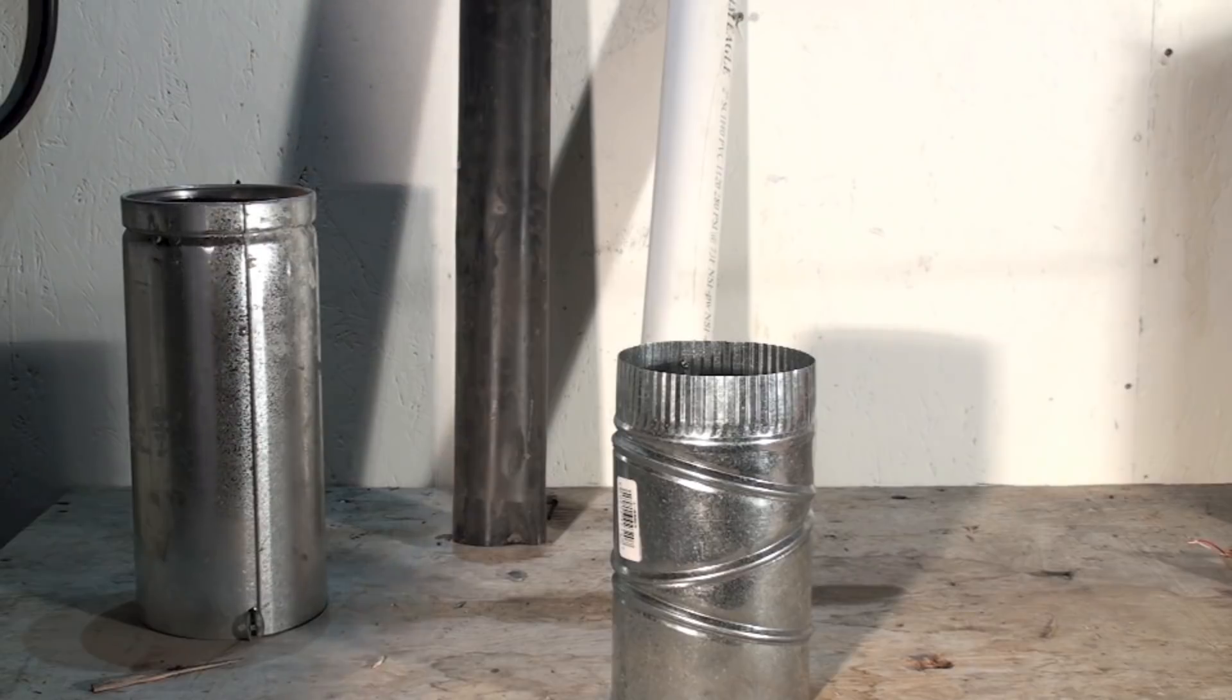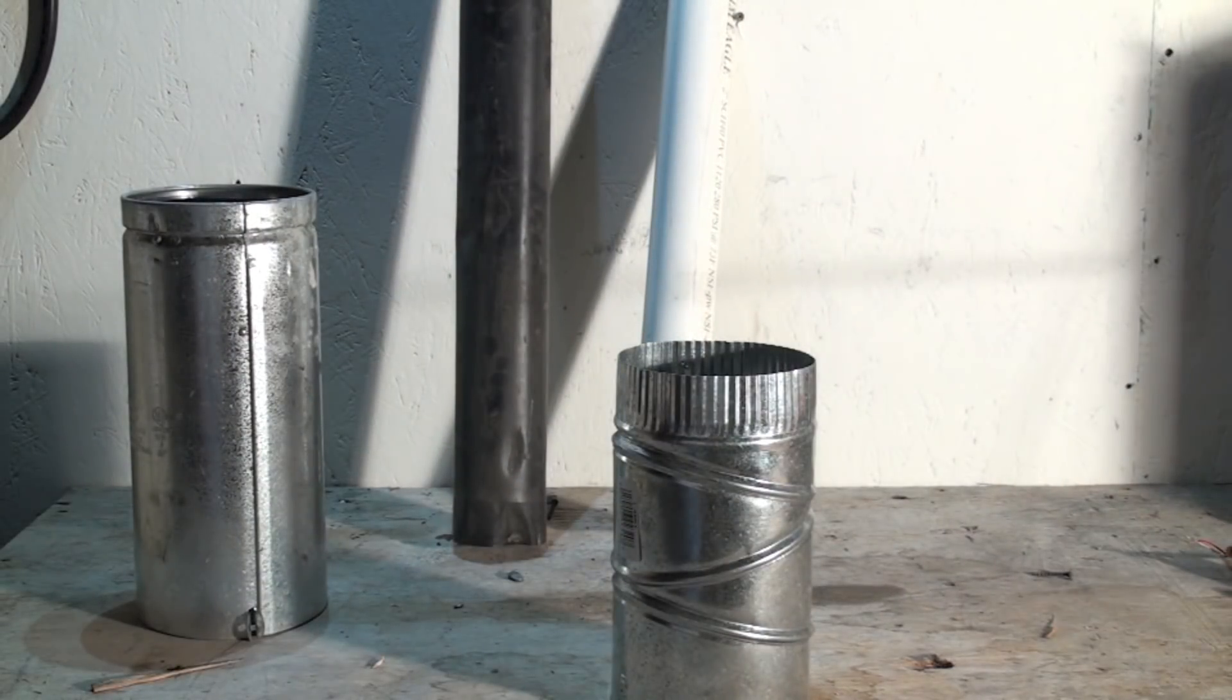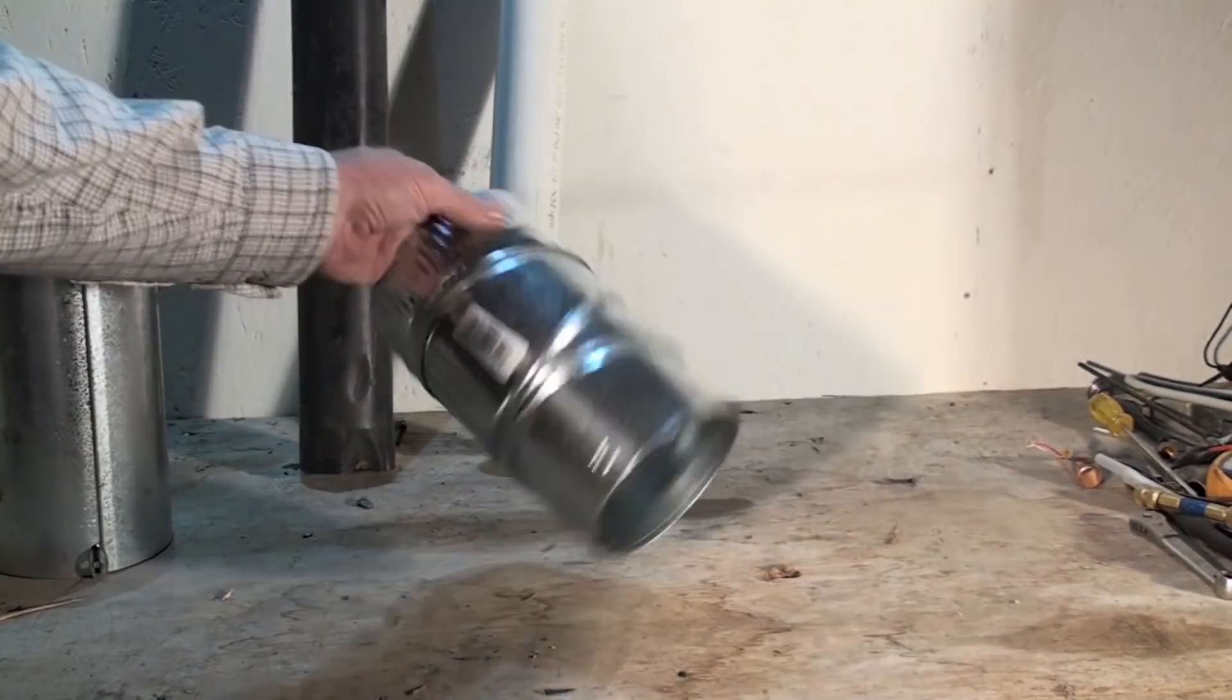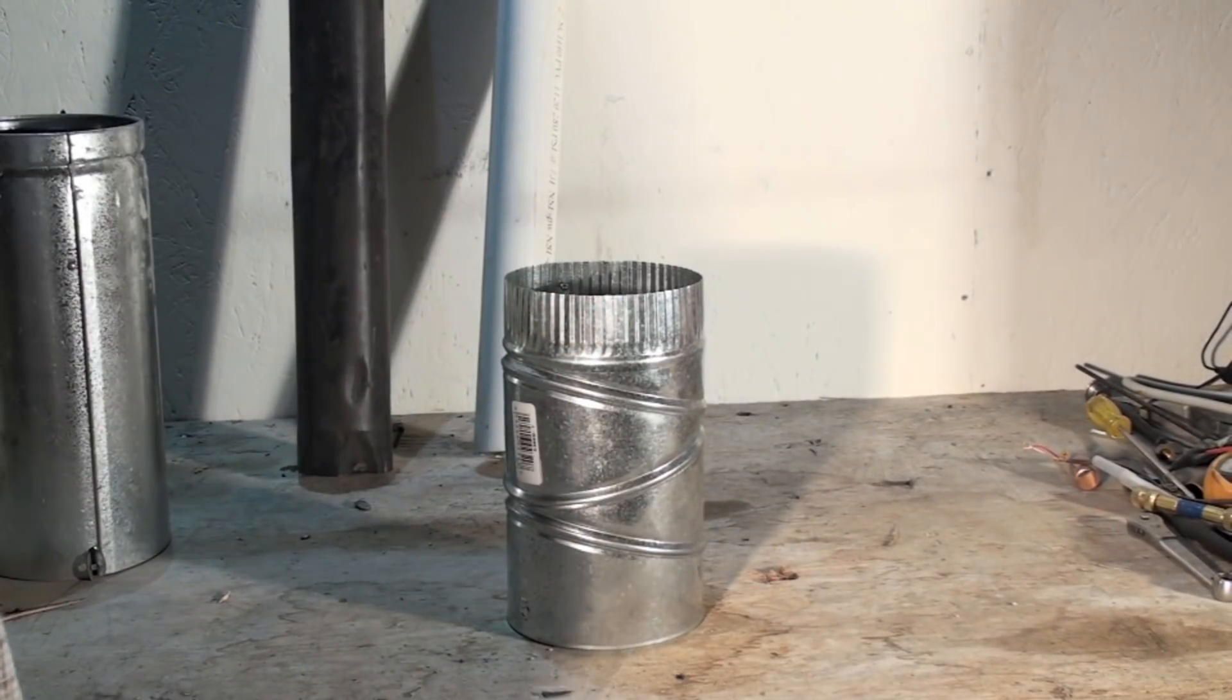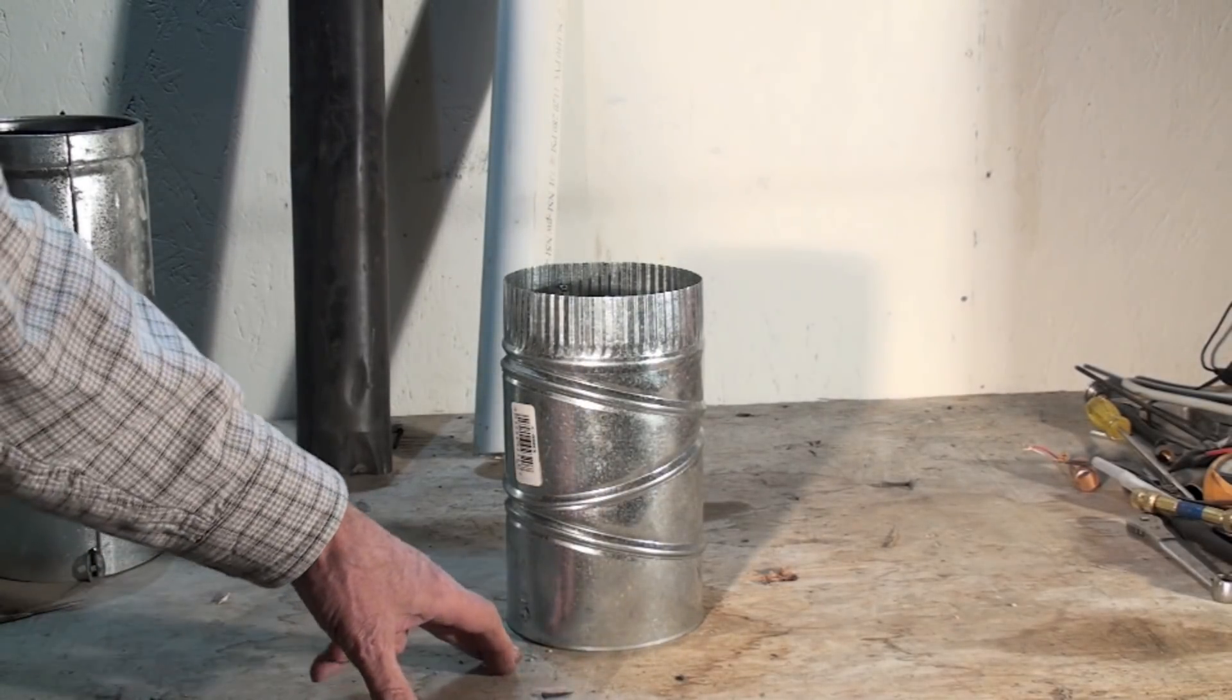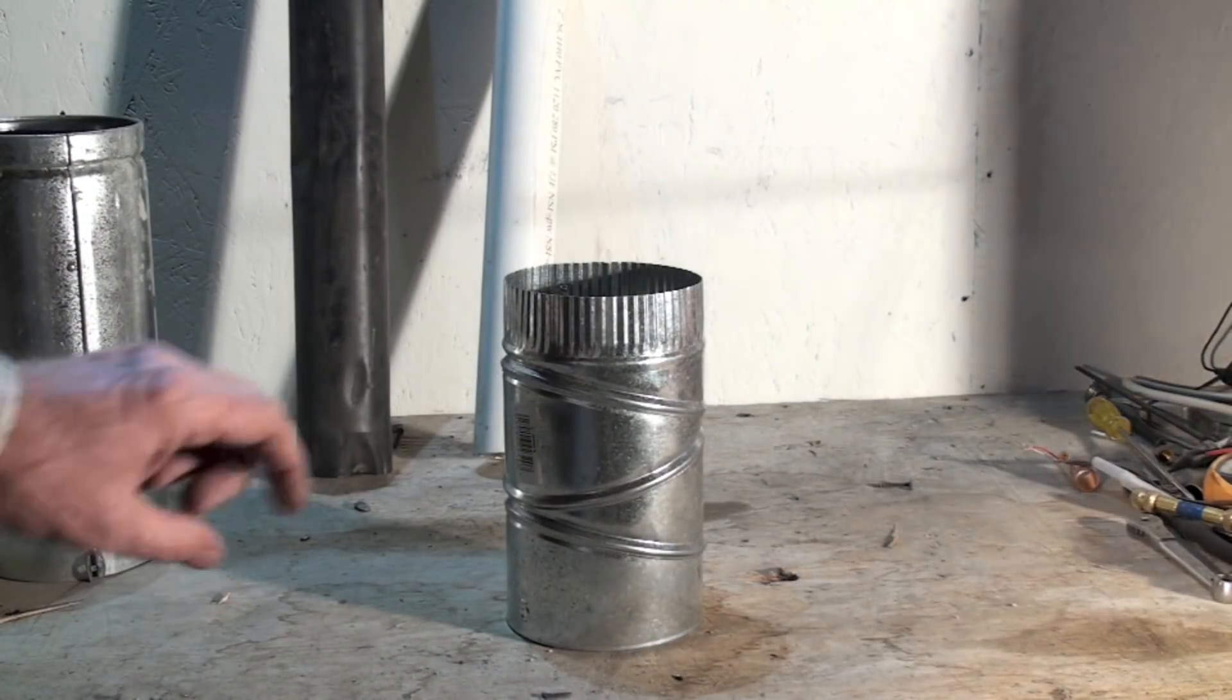This is one of the oldest vents. That is what we call C-Vent. C-Vent is nothing more than galvanized pipe that's single wall. There's a six inch clearance to combustibles. Now this is for gas furnaces only.